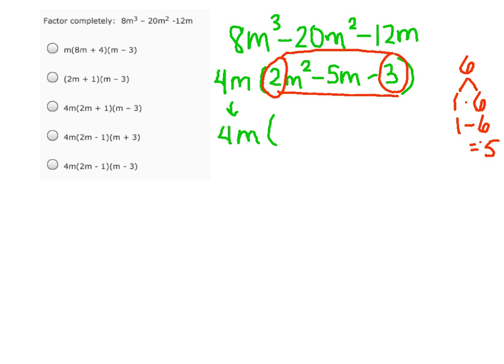So we can rewrite this as 2m squared plus m minus 6m minus 3. And you see this middle part, m minus 6m equals negative 5m, so we're just rewriting that.